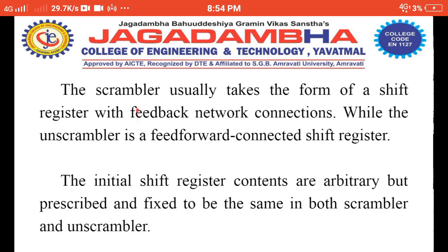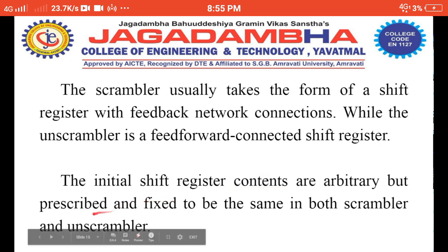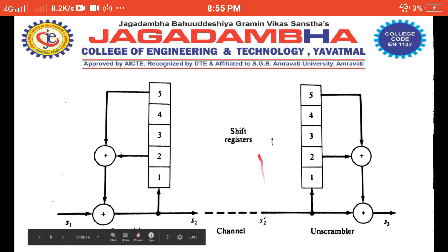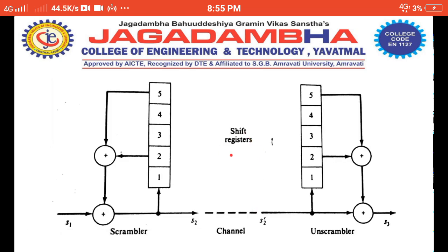The scrambler usually takes the form of a shift register with a feedback network connection, while the unscrambler is a feed-forward connected shift register. The initial content of the shift registers are arbitrary but prescribed and fixed to be the same in both scrambler and unscrambler. Now this is a typical example of scrambler and unscrambler.